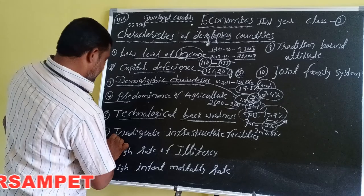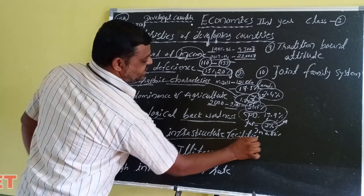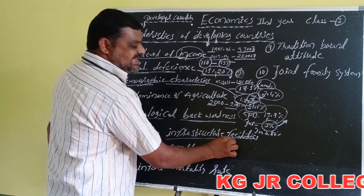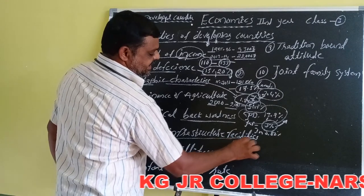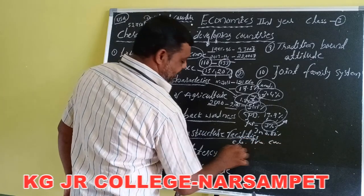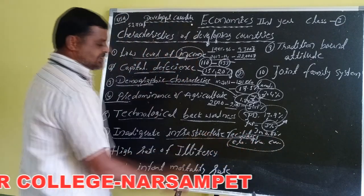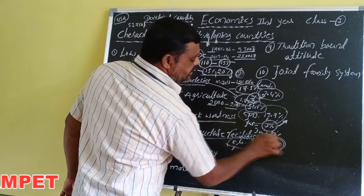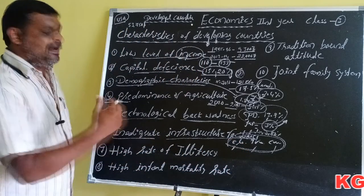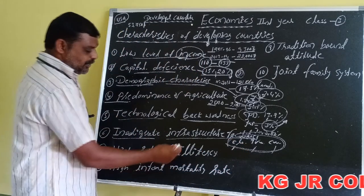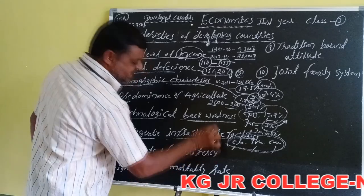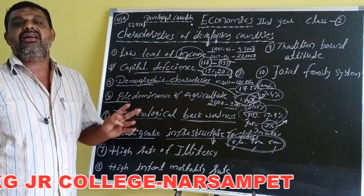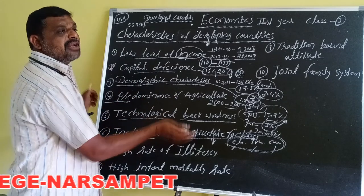Inadequate infrastructure facilities is another characteristic. The main infrastructure facilities — electricity, transport, and communication — are slowly developing. These reasons cause backwardness in all sectors: the agricultural sector, industrial sector, and service sector.